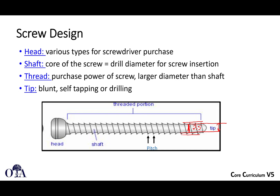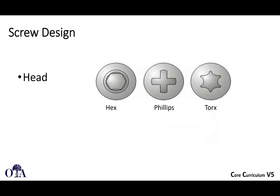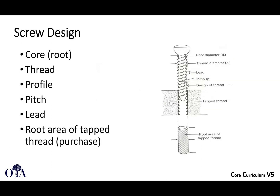The tip of the screw can be blunt, it can have a self-tapping appearance, and some screws have a drilling tip on the end. Here are some different screw head designs viewed end-on: a star drive shape, a hex, and a Phillips for some of the smaller screws nowadays.